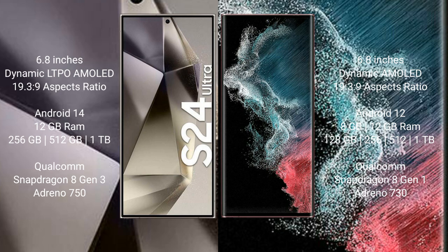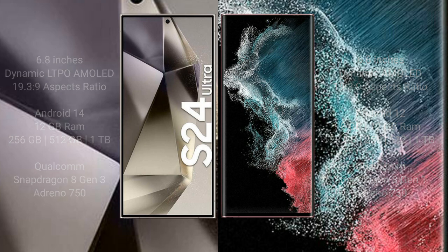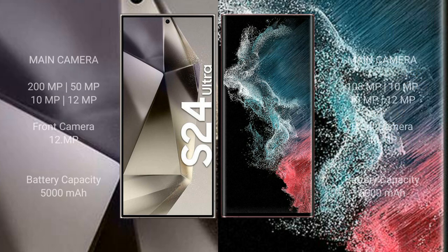Samsung Galaxy S22 Ultra comes with 8GB or 12GB RAM and 128GB, 256GB, or 1TB internal storage, with a Qualcomm Snapdragon 8 Gen 1 processor and Adreno 730 GPU.